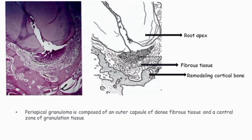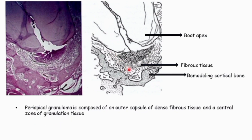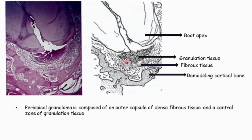Periapical granuloma is composed of an outer capsular fibrous tissue. This is the outer capsule of dense fibrous tissue, and a central zone of granulation tissue. This is the central zone of granulation tissue.